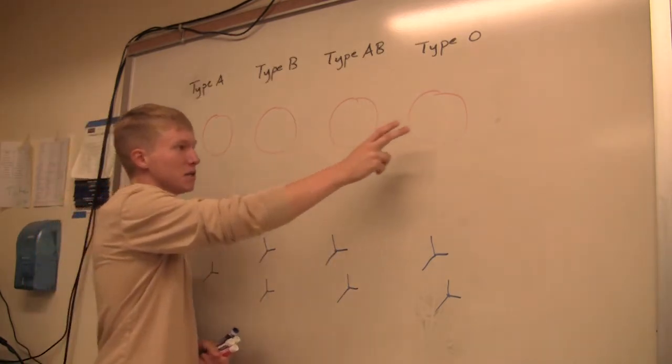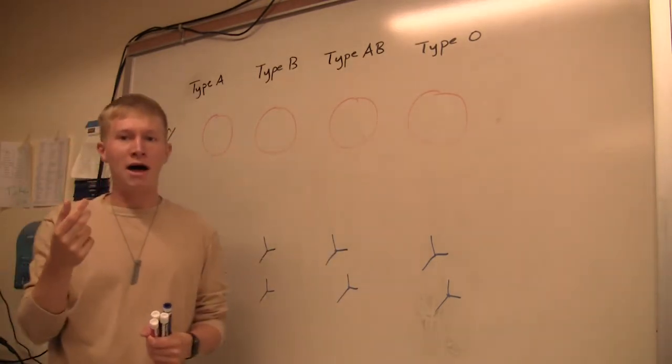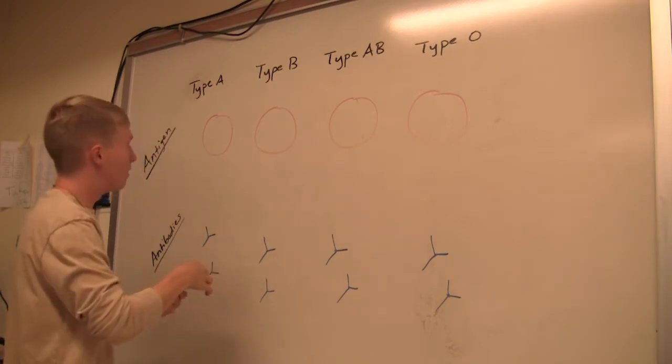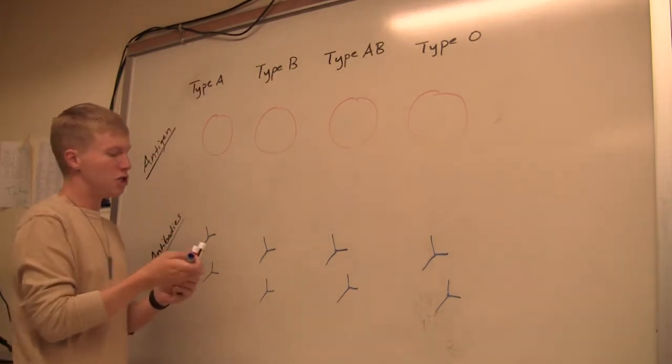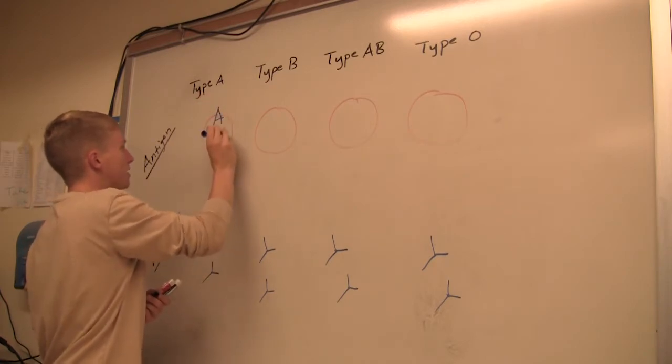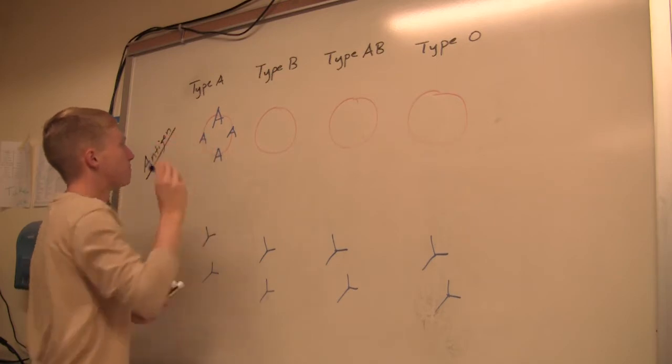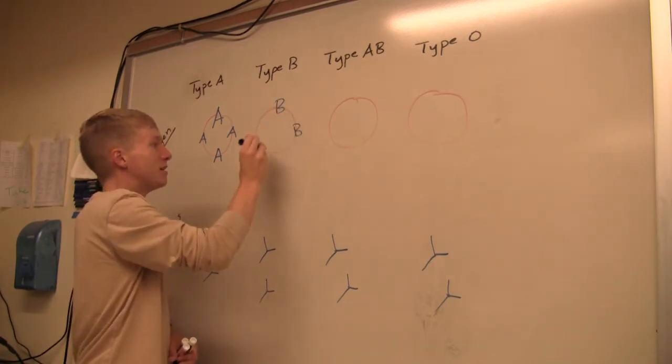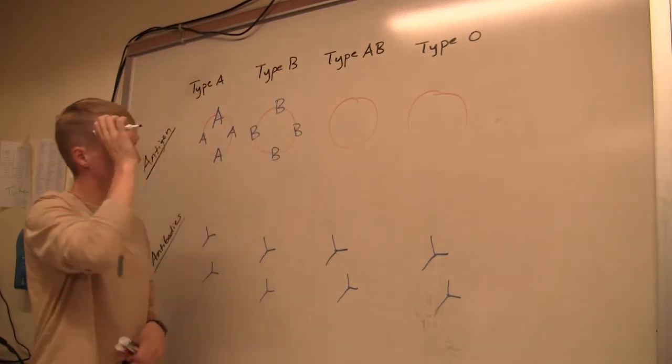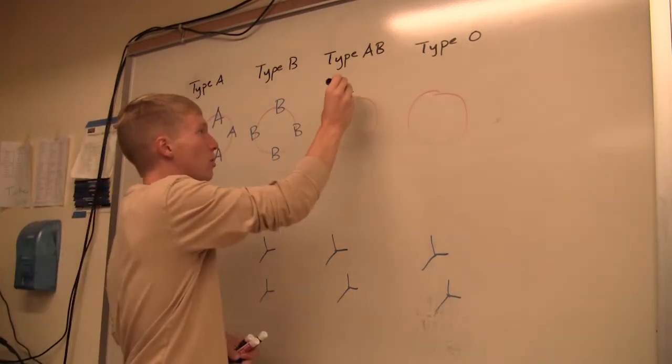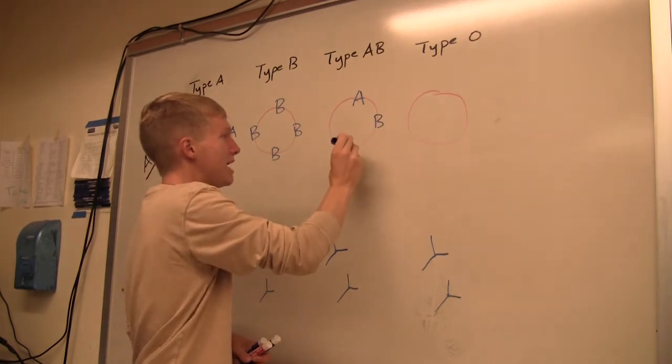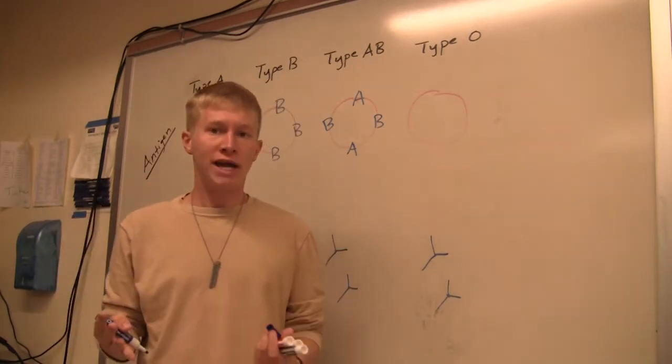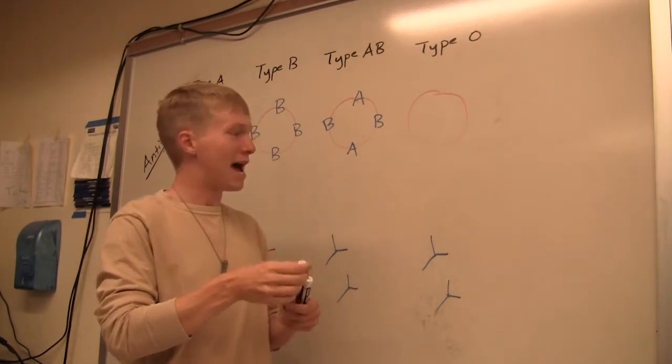On all your blood cells you have a certain cell marker that allows your body to recognize it as that specific blood type called antigens. For example, if you have type A blood, you're going to have A antigen on your cell surface. If you have type B blood, you have the B antigen on your cell surface. If you have type AB blood, you have both A and B antigen. And type O blood has no antigens. This is what we often refer to as naked blood.